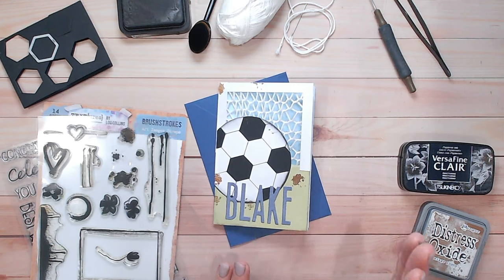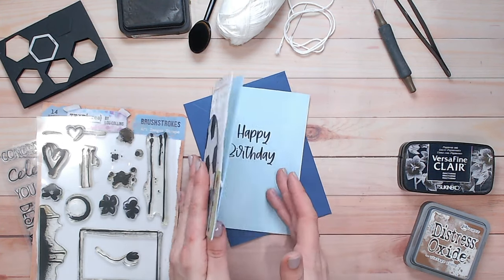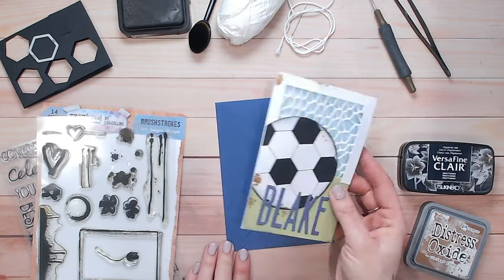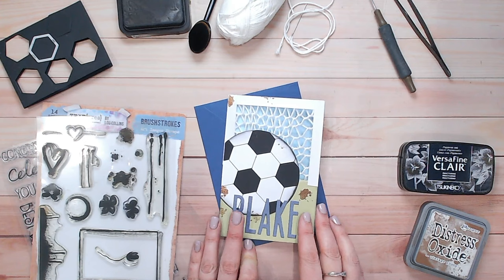So let's get started with what we're going to need. Plain cardstock, I've got white, green, black and then I've also got some pale blue and a dark blue envelope as well. Oh and some dark blue cardstock for the sentiment or the name.